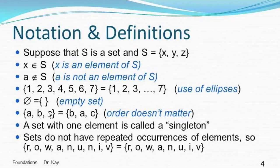Of course, if we have a set, the order of the elements doesn't matter, so the set containing elements a, b, and c is exactly the same as the set containing b, a, and c. If you have a set with just one element, it's called a singleton.